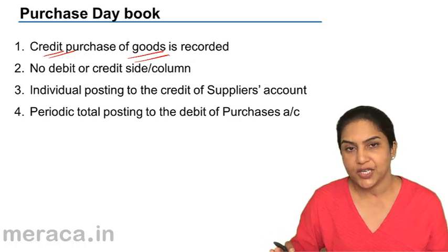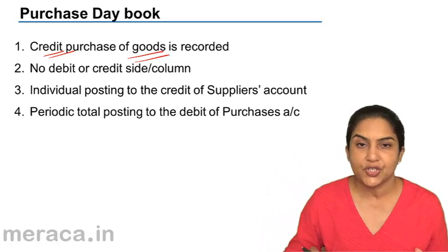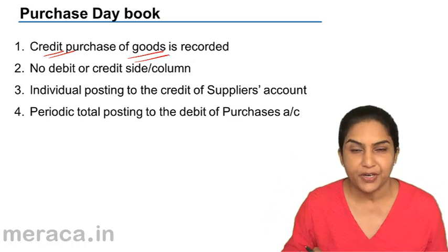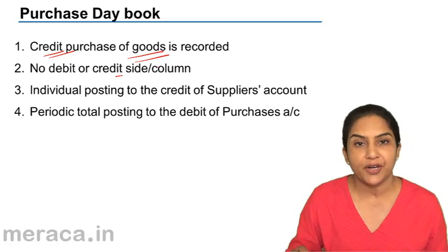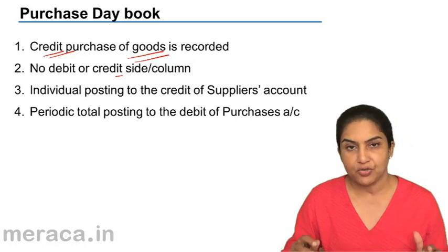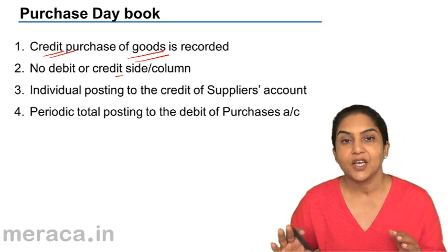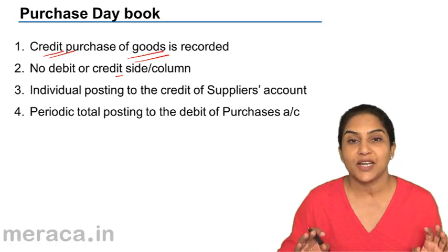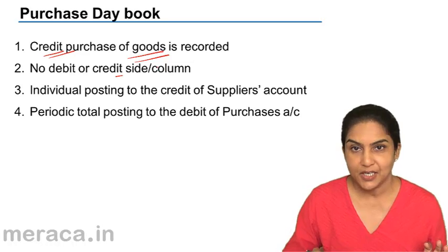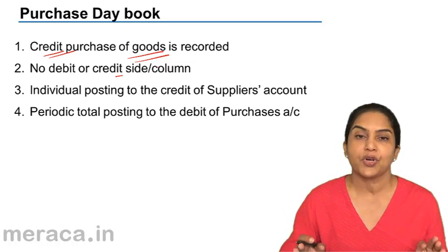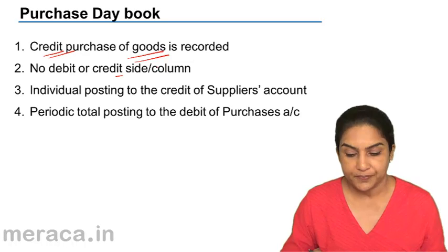Now, since only credit purchases are going to be recorded in this book, it does not have any debit or credit column. There is no question of putting something on the debit side or the credit side. We know that purchases is always an expense and always debited, so this register does not have a debit or a credit column.